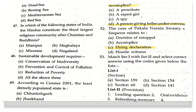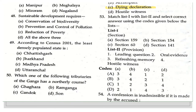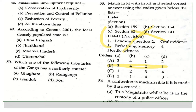The next question involves matching sections with provisions. The sections given are 159, 154, 60, and 141, to be matched with: leading questions, oral evidence, refreshing memories, and hostile witness. Section 141 talks about leading questions, Section 60 talks about oral evidence, and Sections 154 and 159 relate to hostile witness. The correct answer is option B.